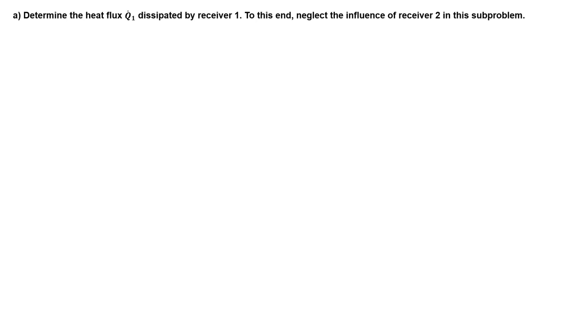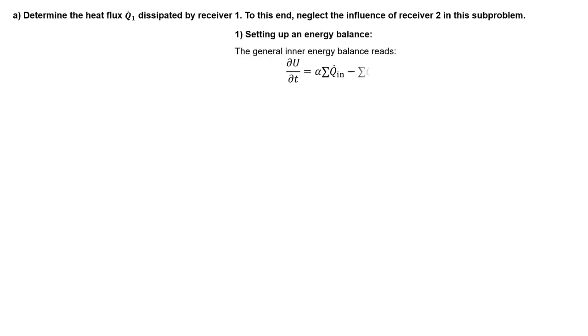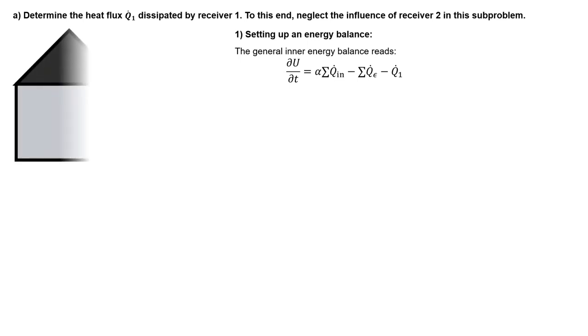In the first task, we are asked to determine the heat flux Q1 which is dissipated by receiver 1. At this point we neglect the influence of the second receiver. We can determine its flux from an inner energy balance around the receiver. We define the boundaries of our control volume such that it falls just inside the receiver, so we do not have to take into account the effect of reflection and transmission, but only absorption and emission.